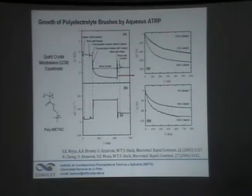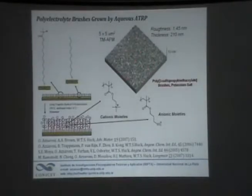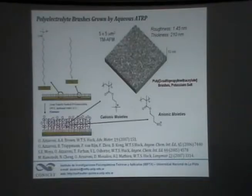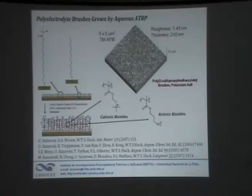In two to three hours, you can grow the polymer off of the surface and you can have a fairly smooth polymer surface which is nearly 100 to 300 nanometers. This is a case of a sulfonate brush with sulfonate moieties, which has a roughness of 1.45 nanometers and a thickness of about 200 nanometers. For a 200 nanometer polymer film, this roughness is not very high, as people familiar with polymers know.